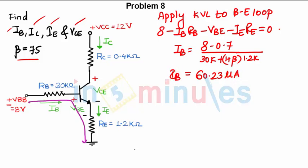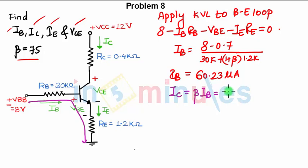So we have the value of IB. Once you know IB, you can find IC as beta times IB. The value of IC is 4.17 milliamperes.